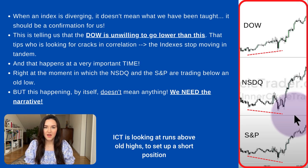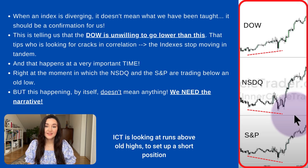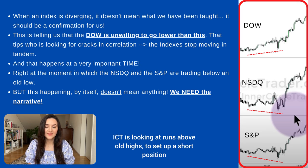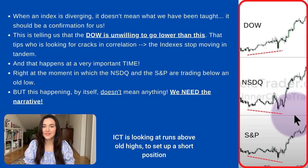That divergence will tip off those looking for a correlation divergence between the different indexes, making people stop and ask: what is going on here? At that moment, the indexes are not moving in tandem anymore, and this happens at a very important time — when both the NASDAQ and the S&P are trading below an old low. That said, this alone is not a signal or a signature — it doesn't mean anything by itself. Always keep in mind this is a tip, not a signal. We have to look at the behavior of the price in its entirety.